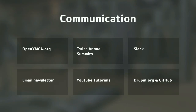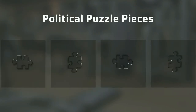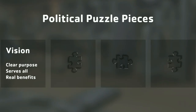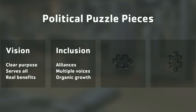Communication is key for a large distribution. We have our website openymca.org, meet twice annually at summits inviting technology, agency, and YMCA partners. We have a Slack channel, monthly email newsletter, YouTube tutorials, a GitHub repository, and a page on Drupal.org. There are a lot of politics around adoption since no governing body mandates that YMCAs use OpenY.